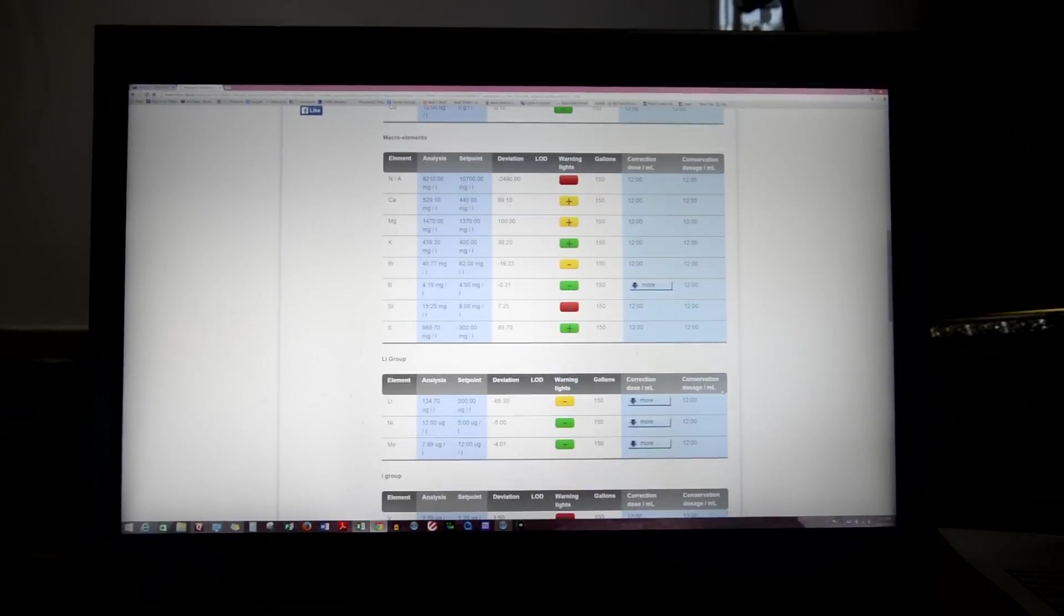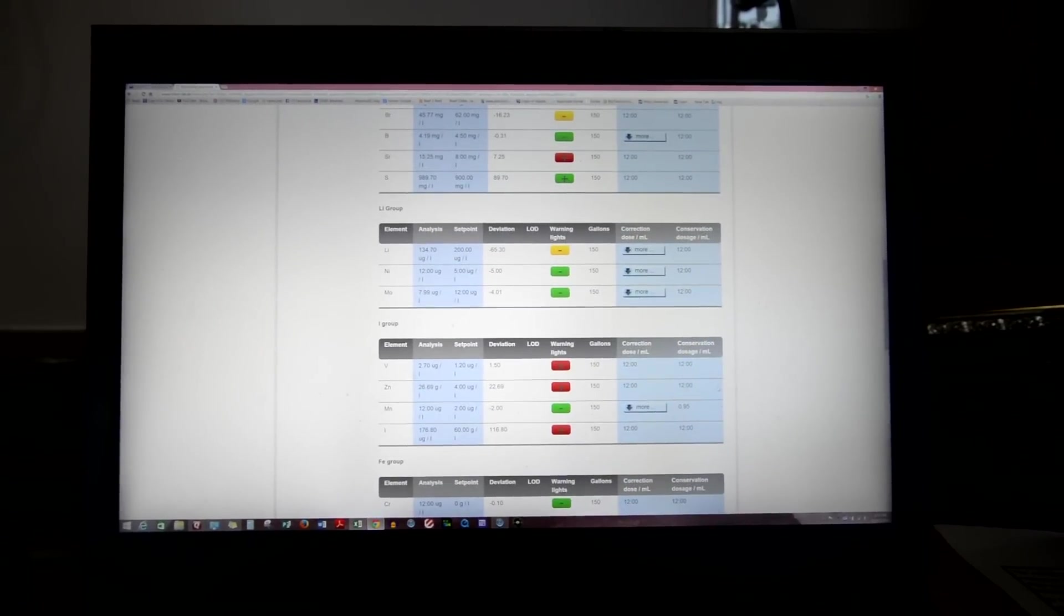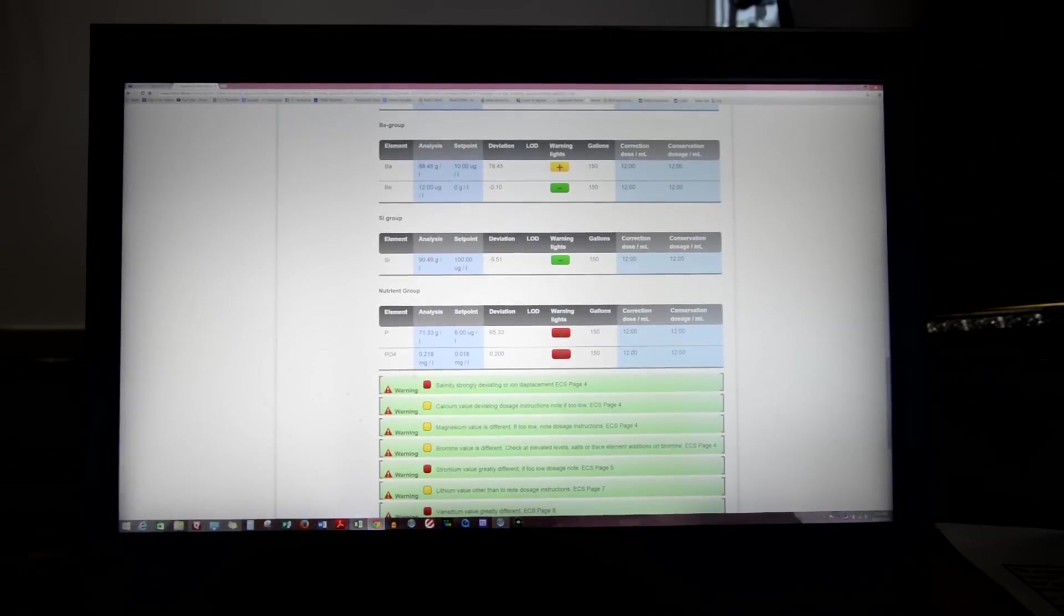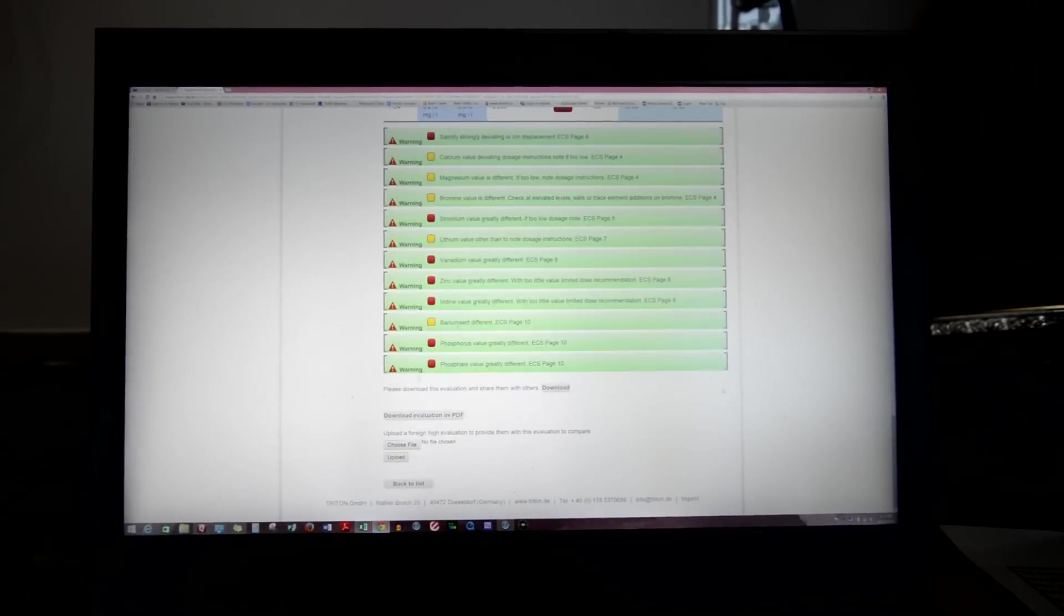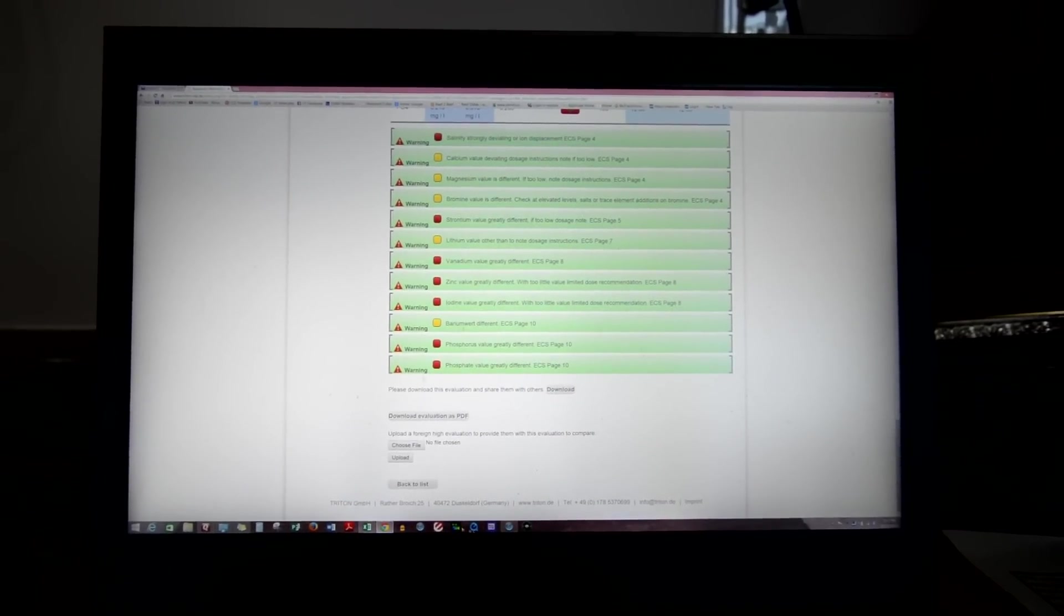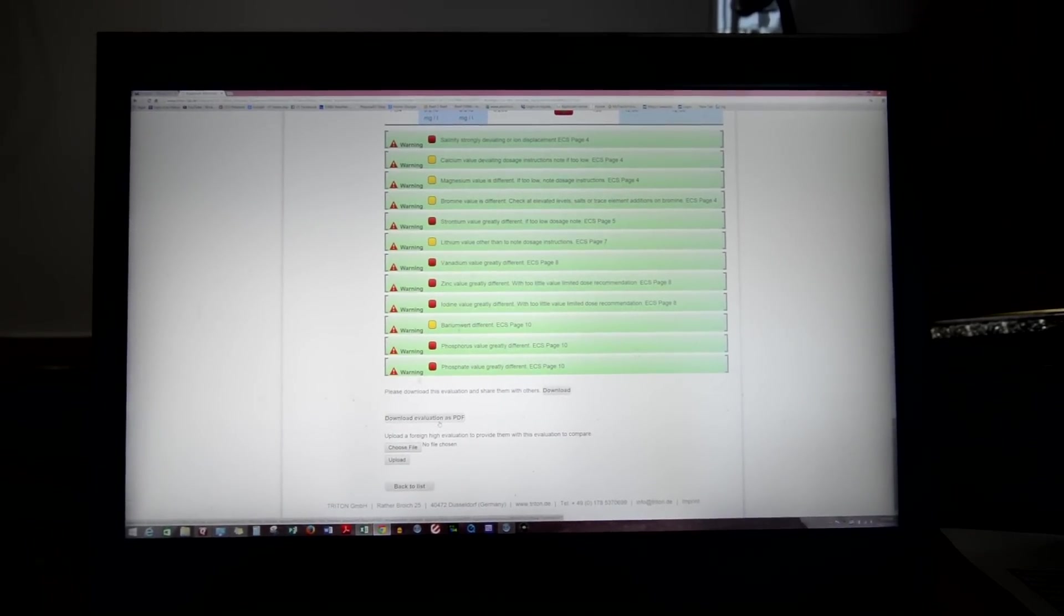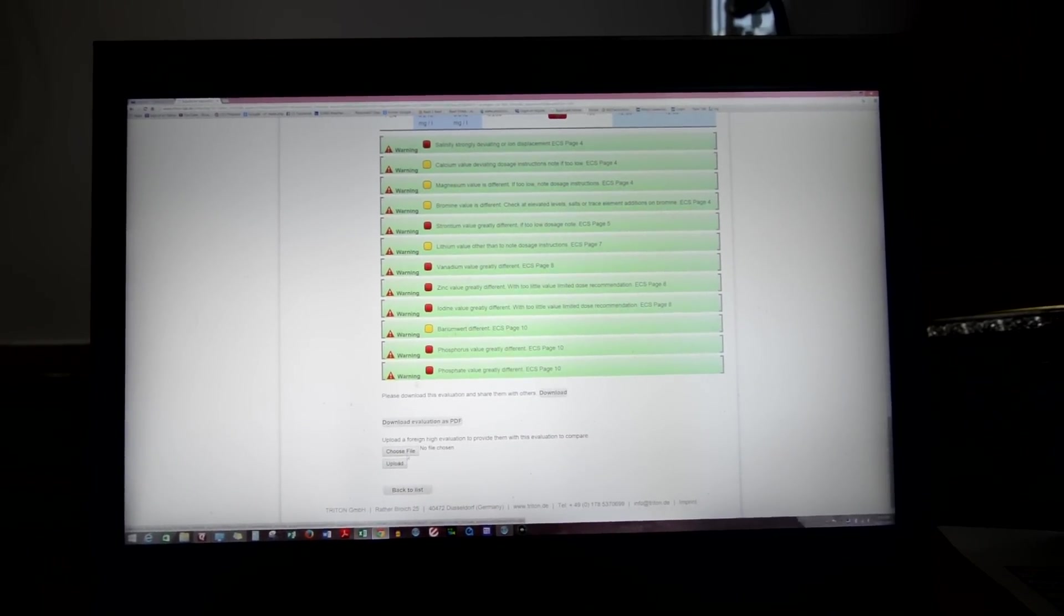But what it basically gives you, it gives you the values. It gives you a red, a green, or a yellow next to them. Obviously green being good, red being high, yellow being low. It tells you what it is and shows you things for corrections. As you can see in this water sample I have a few things off but they don't bother me. Most of these are fine within the parameters I want.